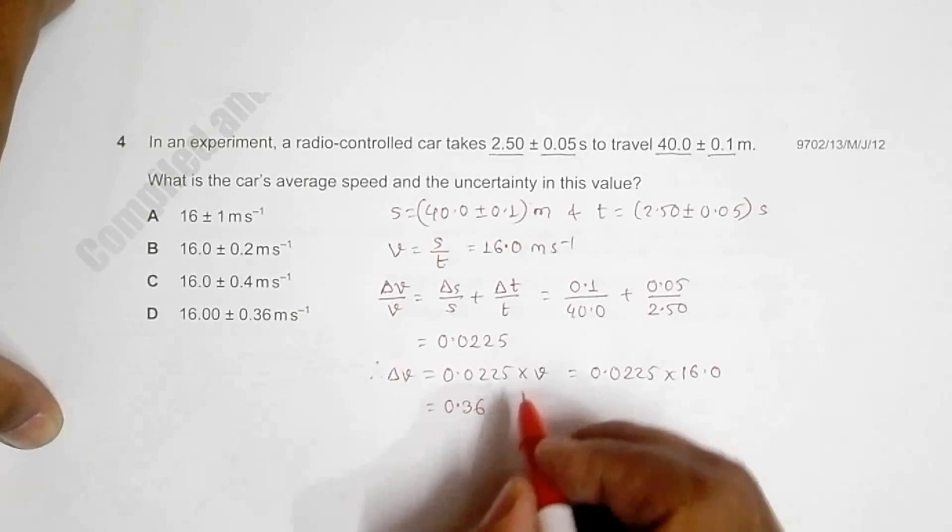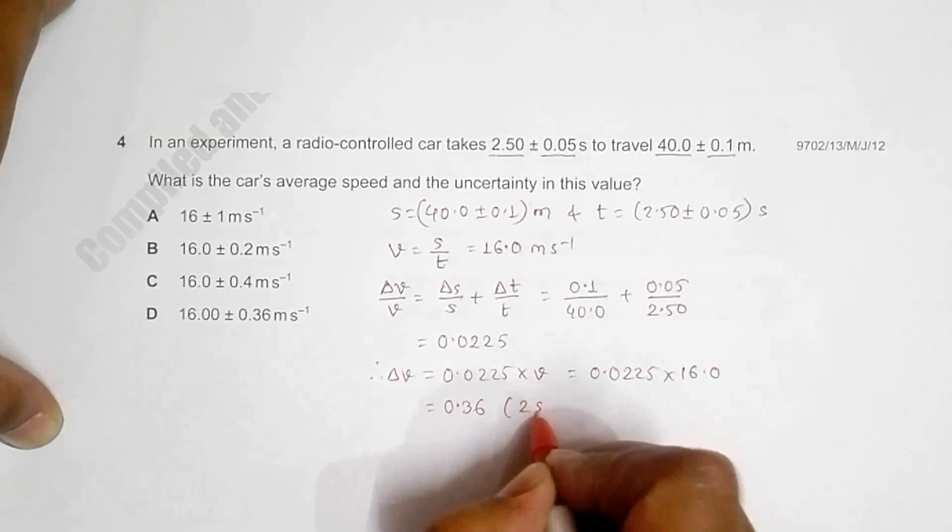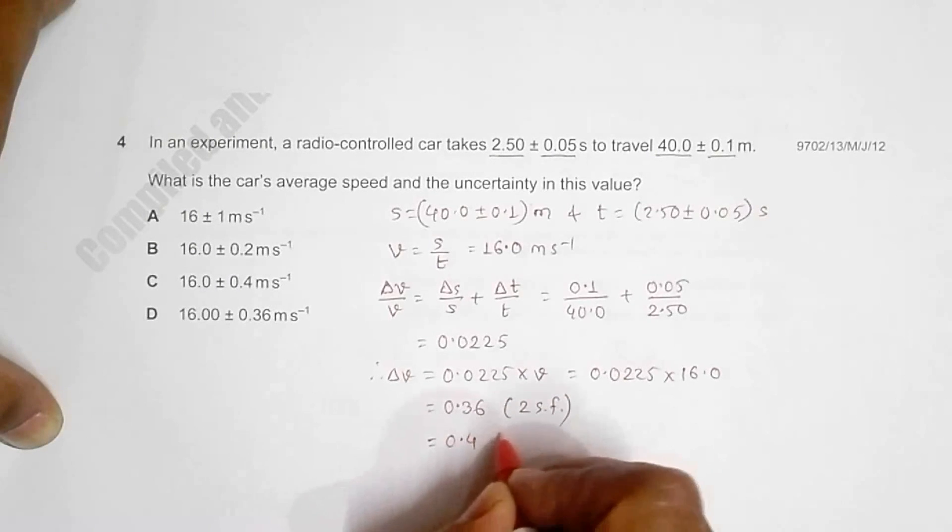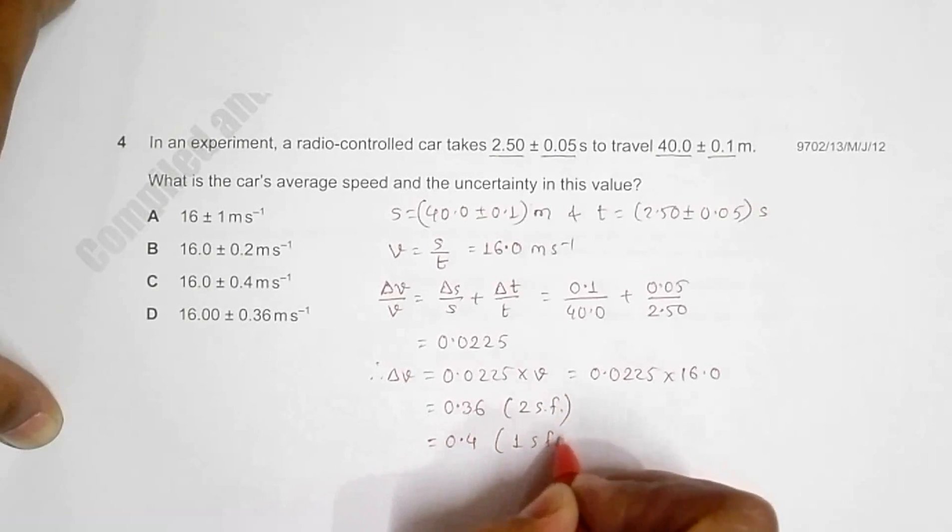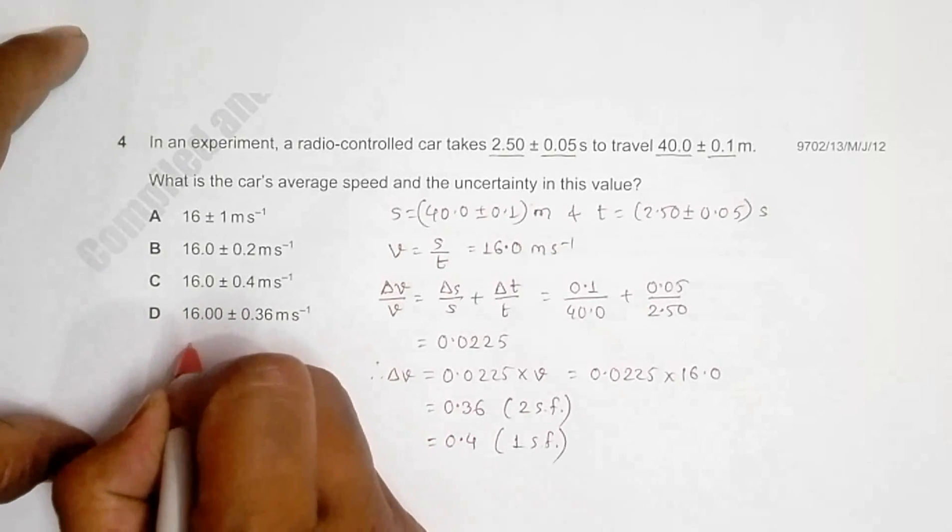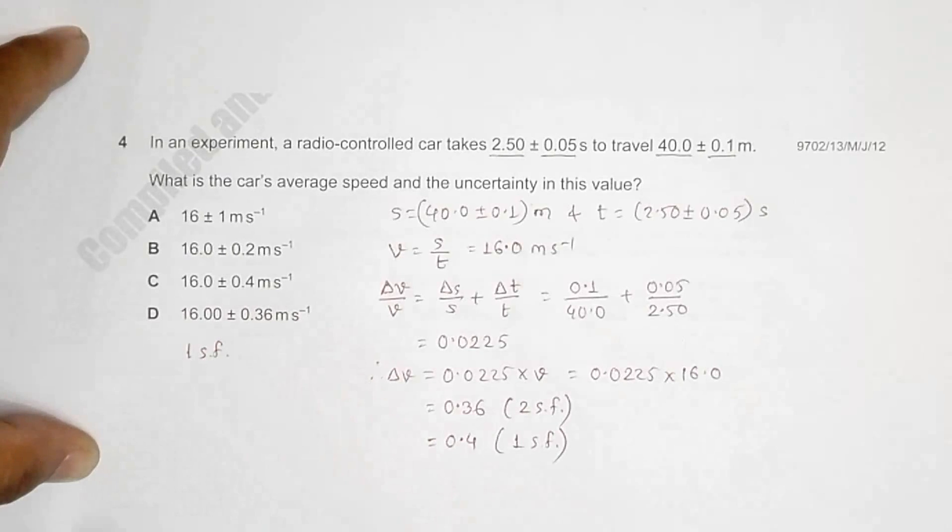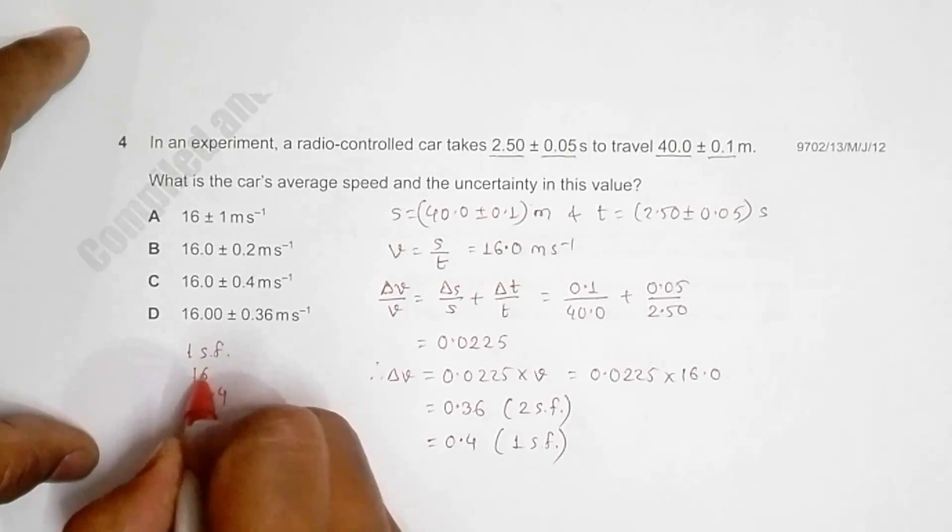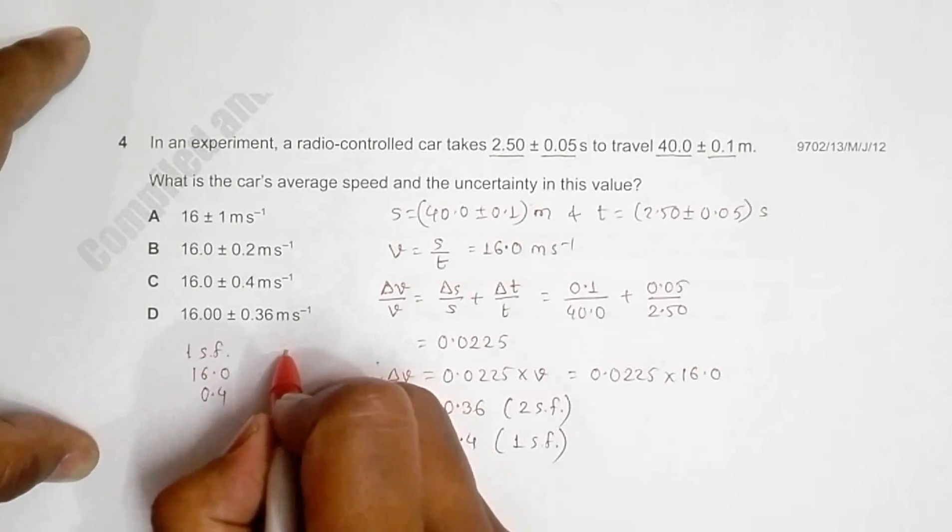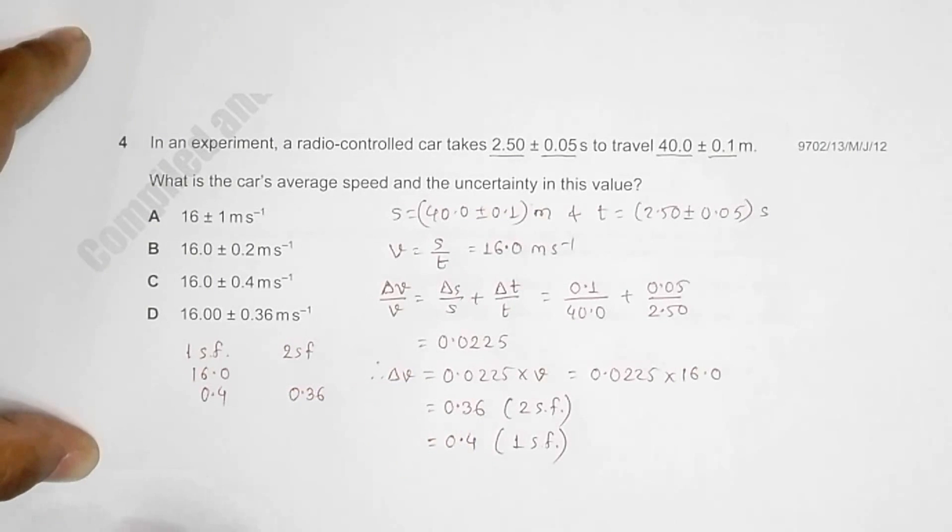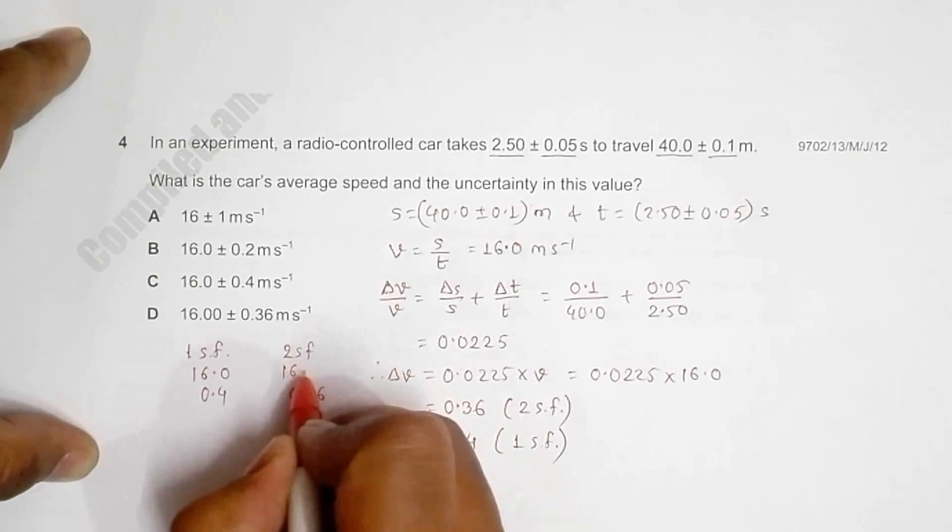We can express error in 1 SF as well, so it is 0.4 if we express it in 1 SF. We have to remember that error can be expressed in 1 SF or 2 SF. If I use 1 SF, error will be 0.4 and the quantity will be 16.0. If I express 2 SF, the error will be 0.36 and the quantity should be 16.0.